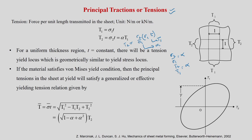Just as sigma_1 versus sigma_2 gives a yield locus, we can also have a tension locus t_1 versus t_2. This can be obtained from sigma_1 and sigma_2. There is an yield locus, and similarly there will be a tension locus. Effective stress sigma_bar leads to effective tension t_bar, which equals sigma_bar times t.